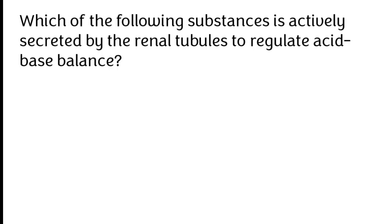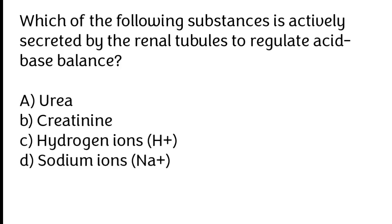Which of the following substances is actively secreted by the renal tubules to regulate acid-base balance? A) Urea, B) creatinine, C) hydrogen ions (H+), D) sodium ions (Na+).